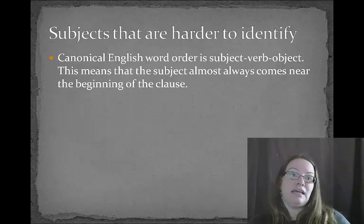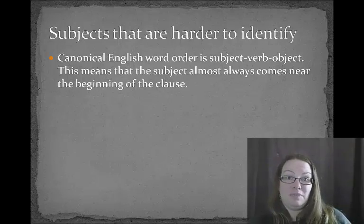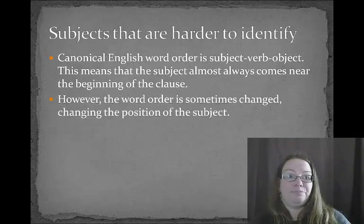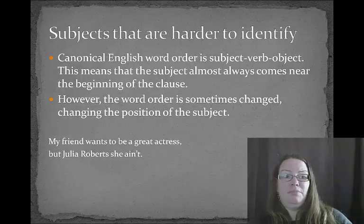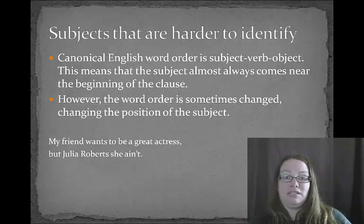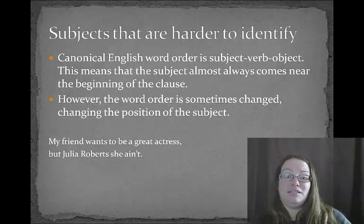Here are some other subjects that are harder to identify. Canonical English word order is subject, verb, object, so the subject almost always comes near the beginning of the clause. However, word order is sometimes changed with the position of the subject. For example: 'My friend wants to be a great actress. But Julia Roberts, she ain't.' In the first clause, 'my friend' is in its normal position, but in the second clause, 'she' is still the subject even though it doesn't come near the beginning. Similarly: 'Rarely do I see a lily without thinking of my grandmother' — 'I' is still the subject, but it doesn't come right at the beginning of the sentence.